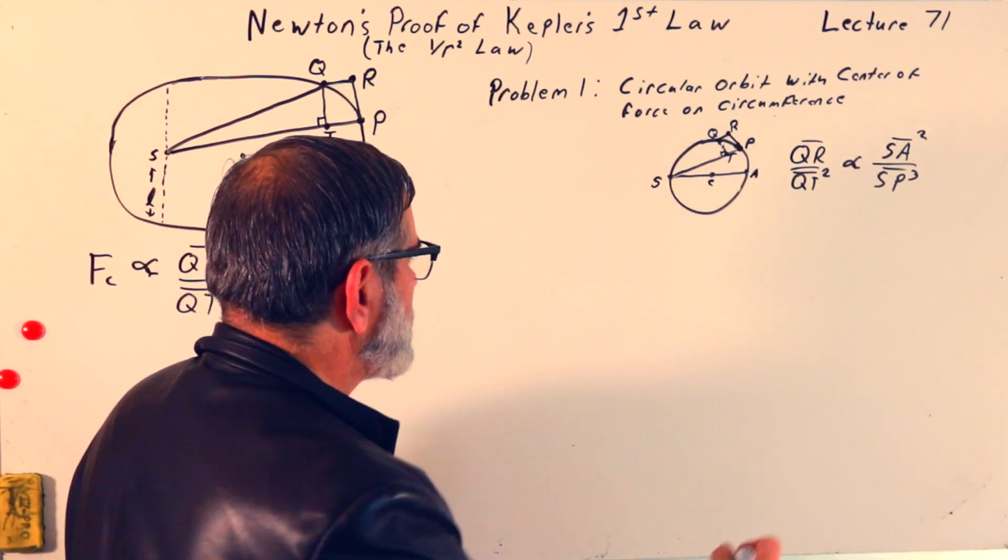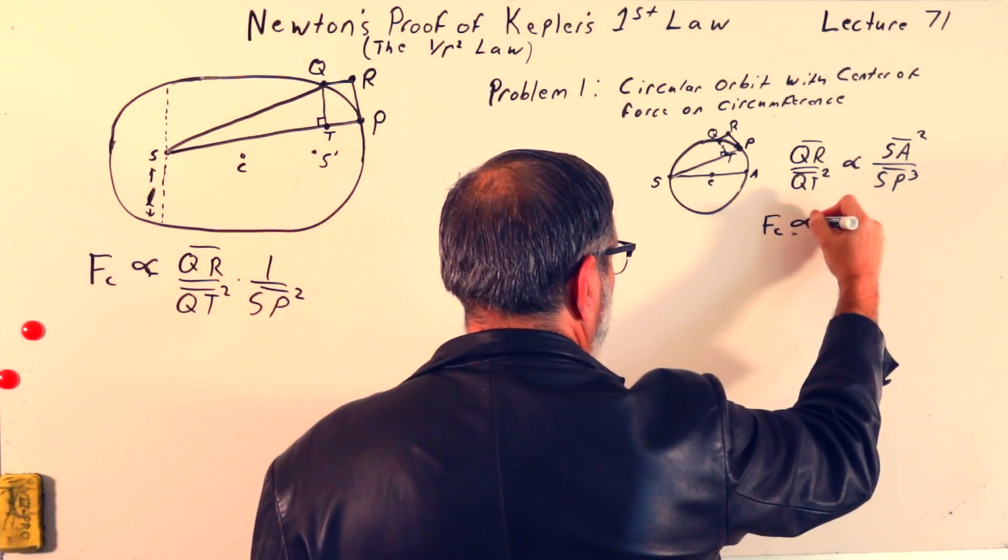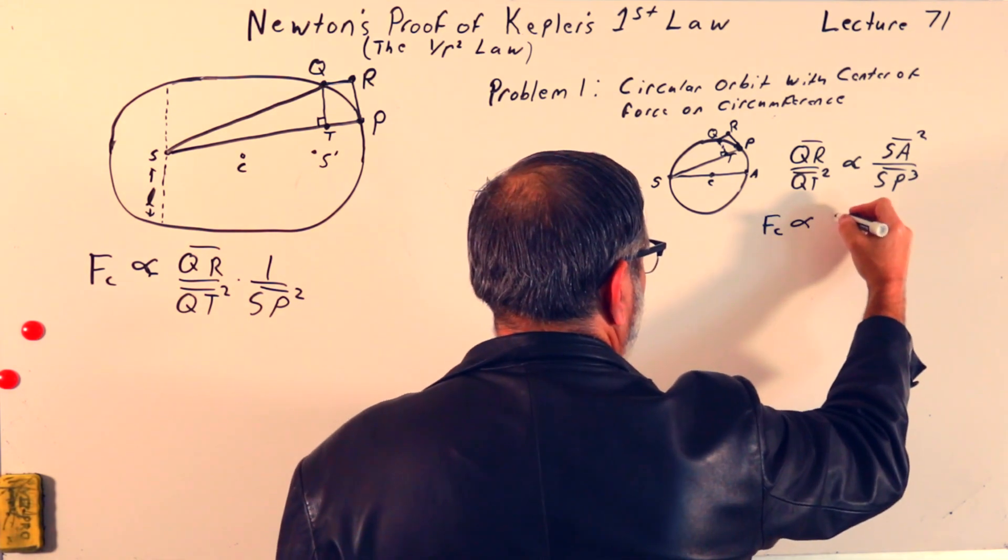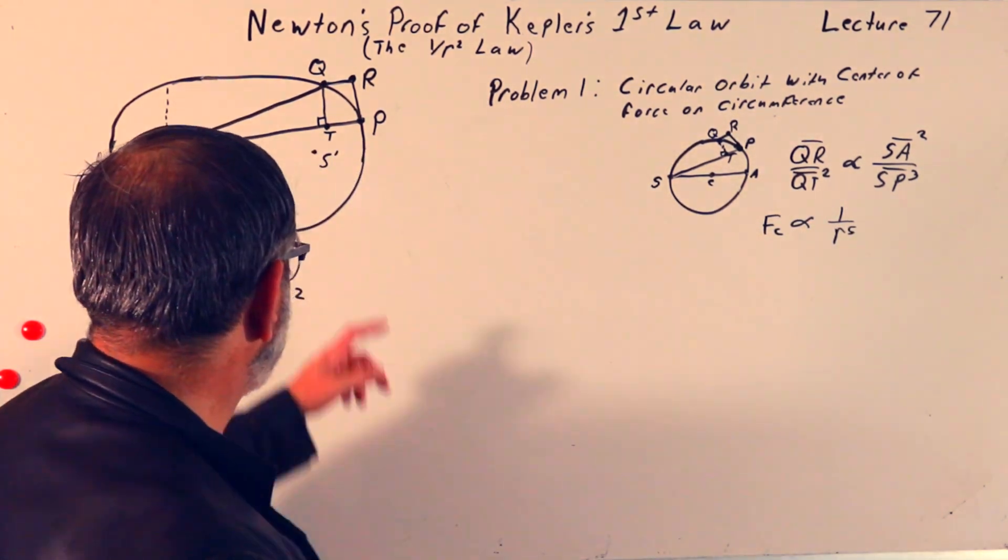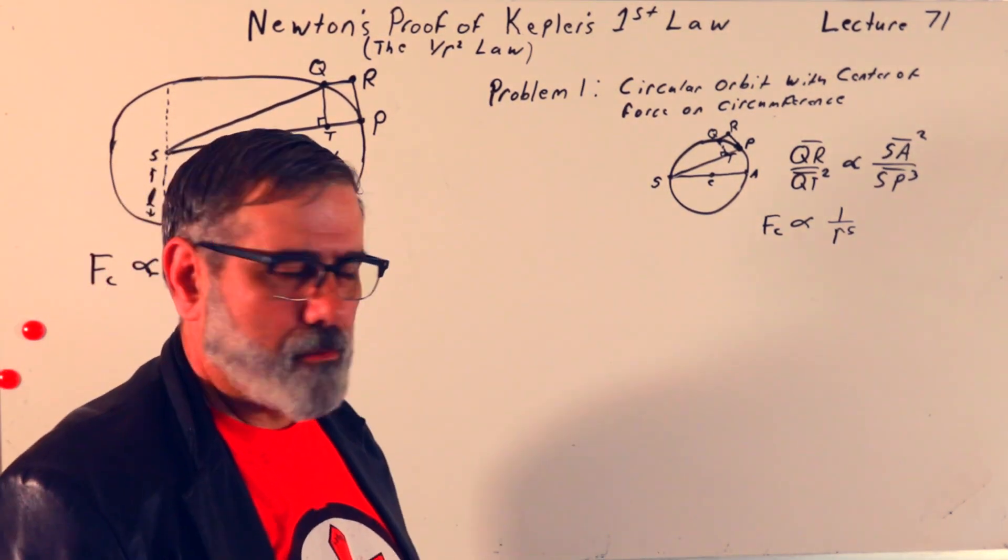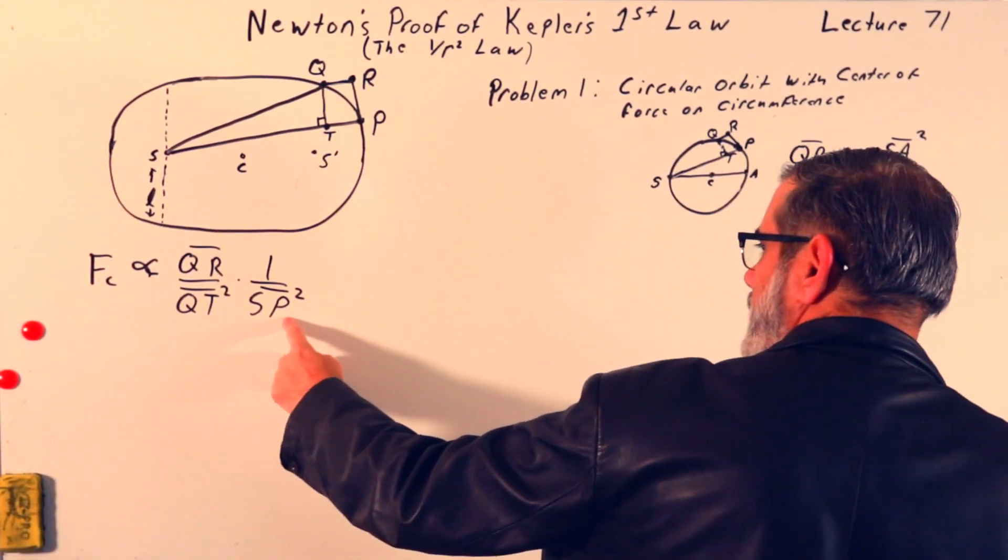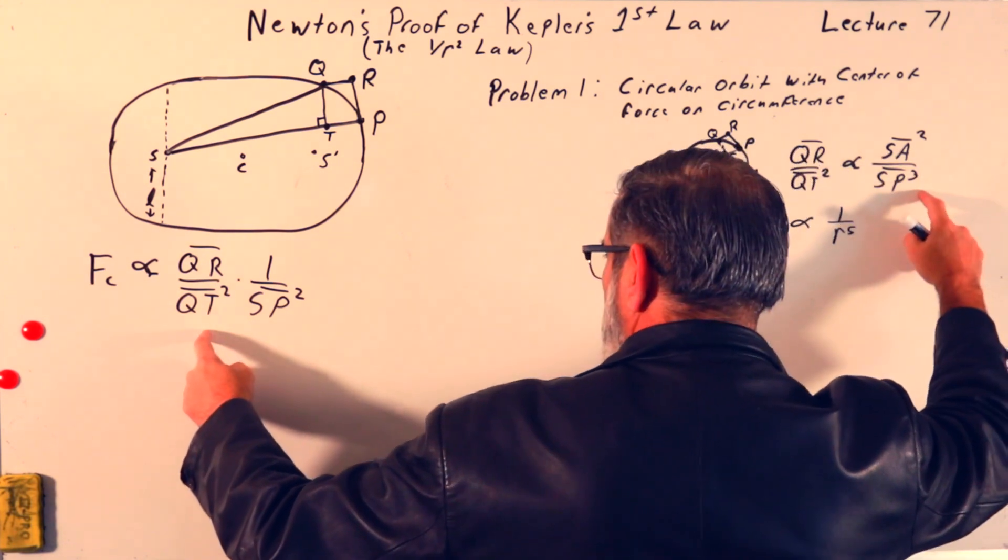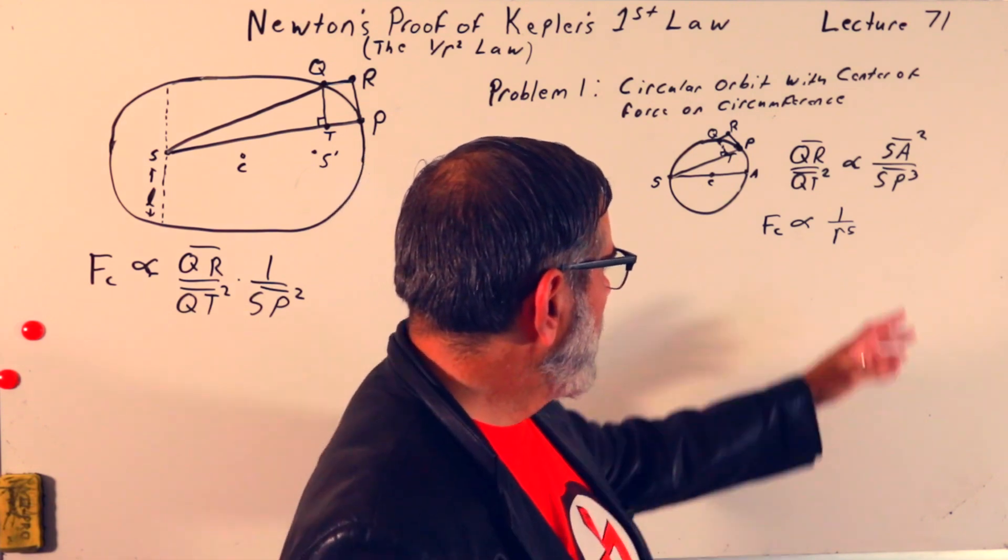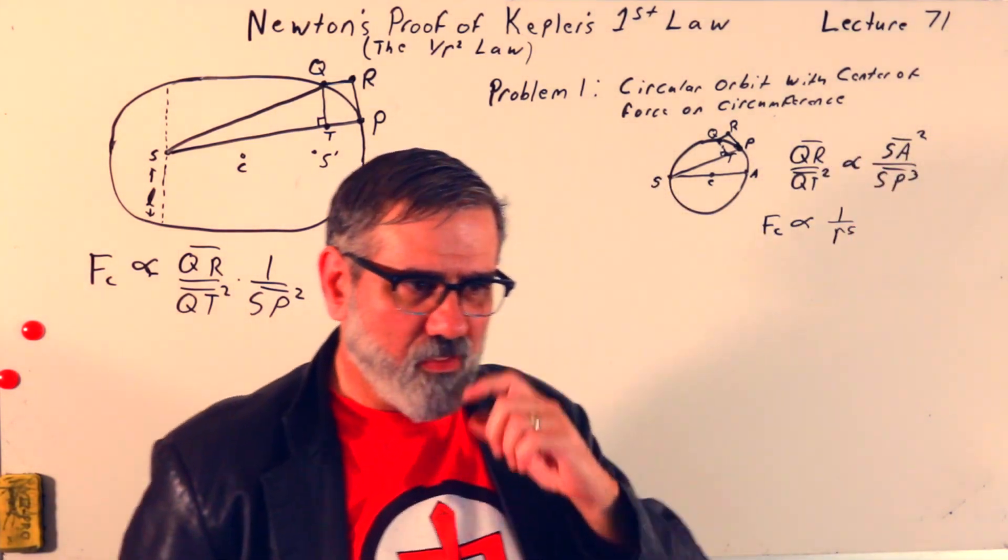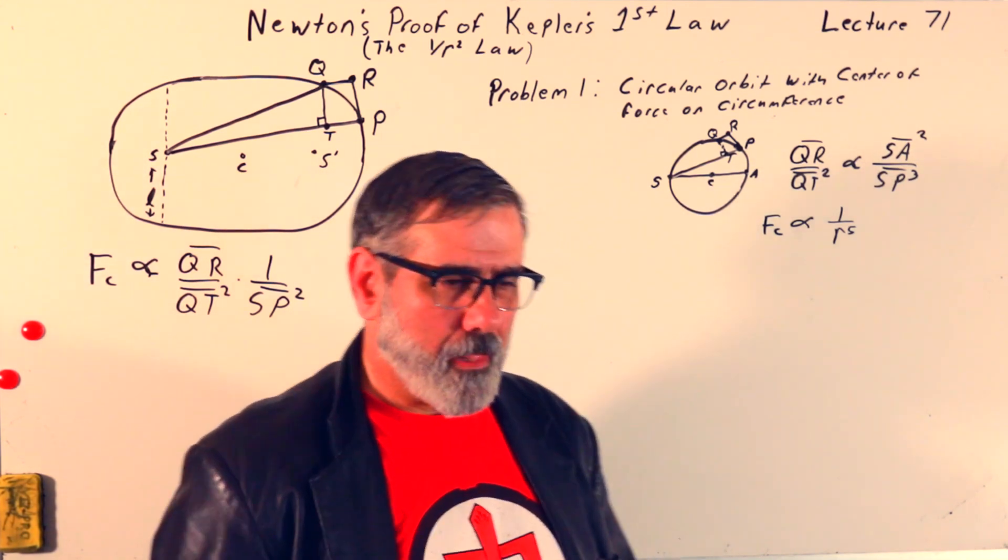But now we have SP cubed in there, so we can write that the centripetal force, if this was the case, would be proportional to 1 over R to the fifth. Why R to the fifth? Because R is just the distance SP. So, I'm going to write it as R now. So, we already have a 1 over R squared here. If QR over QT squared is this SA squared over SP cubed, SP cubed times SP squared is SP to the fifth, R to the fifth. We don't worry about the SA squared, because that's a constant that doesn't depend on the distance of separation. It has more to do with the circle. As it is the diameter of the circle.